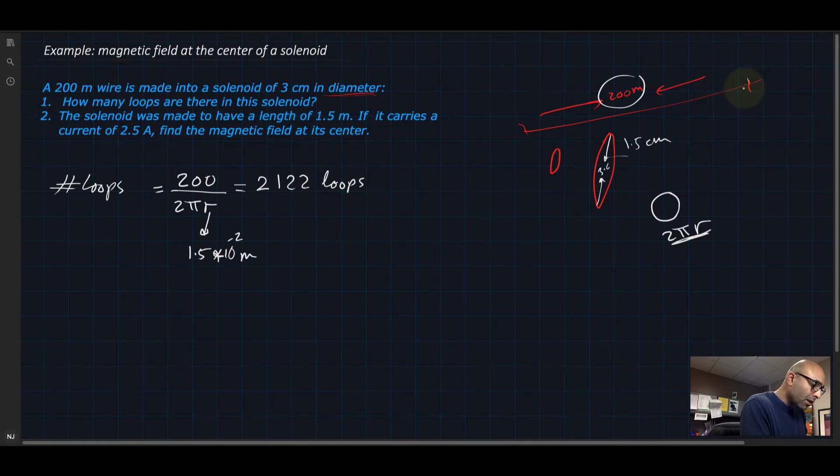So basically this wire was made into a solenoid with 2,122 loops.